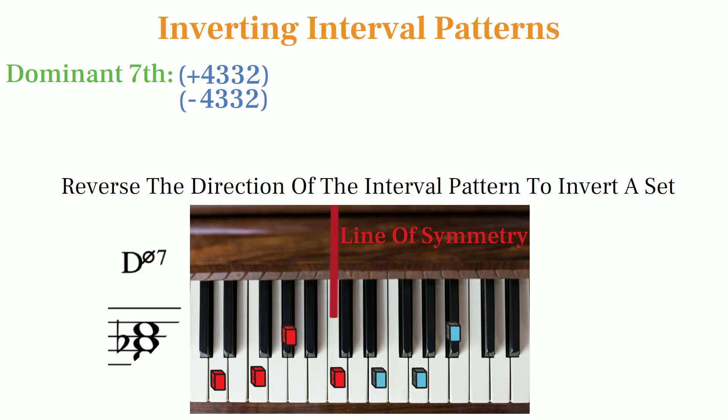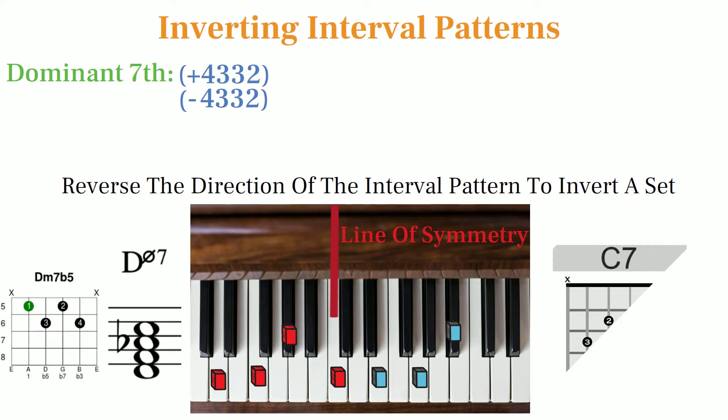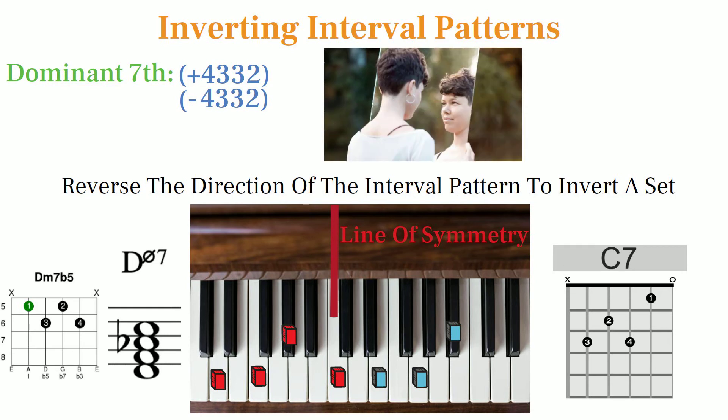This gives us a D half diminished 7th chord, or minor 7b5. This means that dominant 7th chords and half diminished 7th chords are inversions of each other.